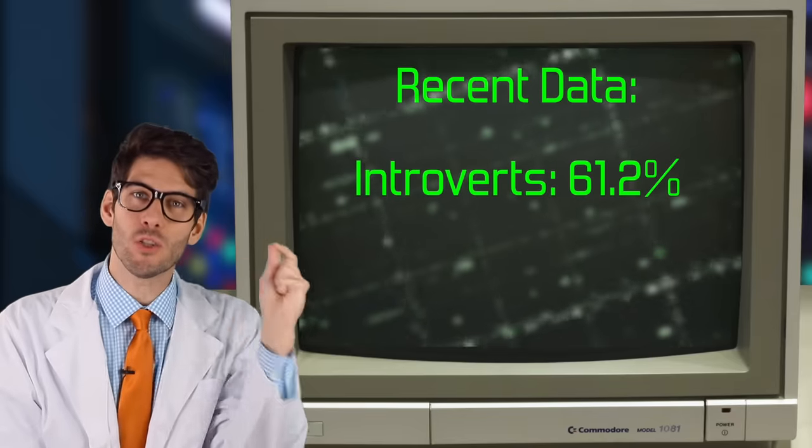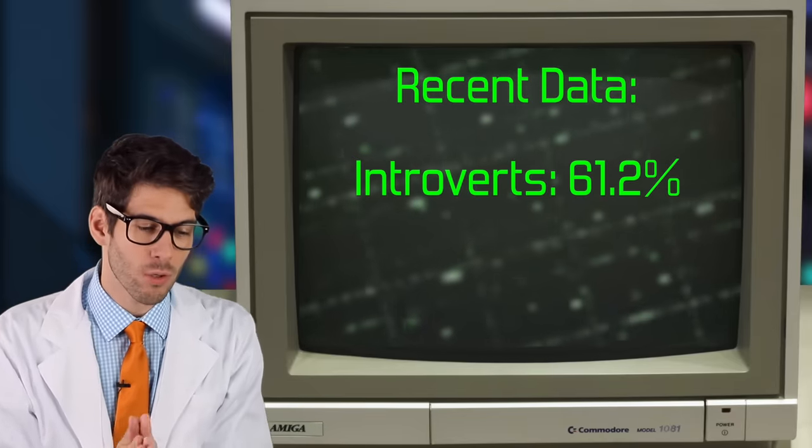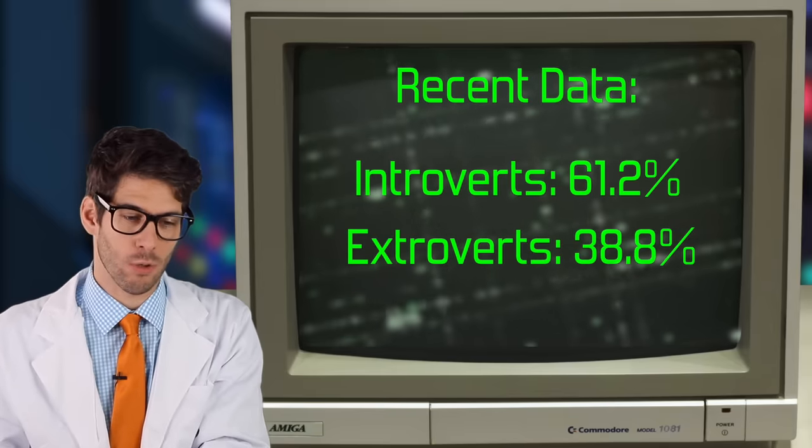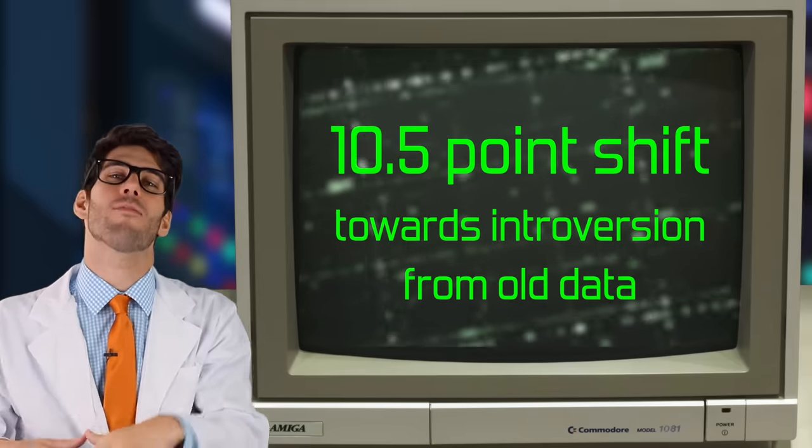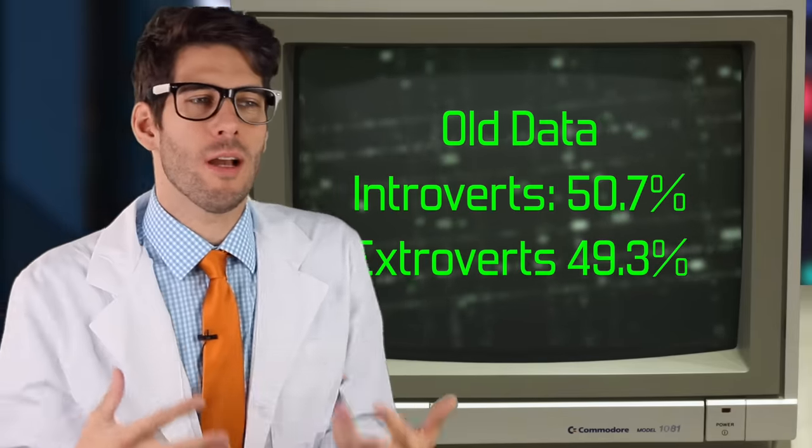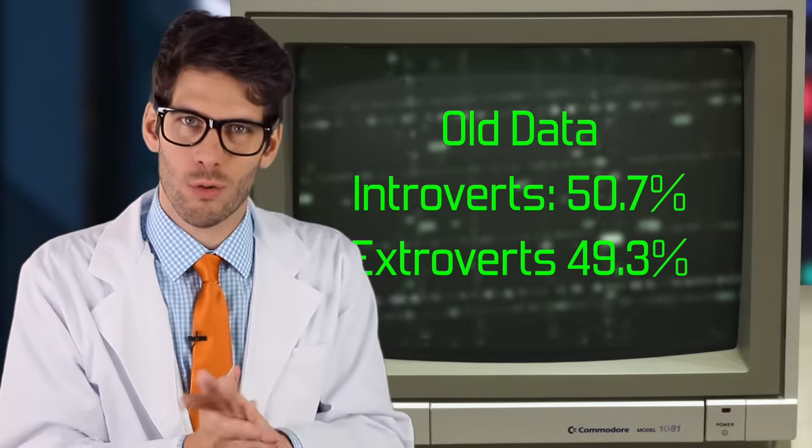First up, let's just look at the four letters and the percentages of each dichotomy. Of course, by the word dichotomy, we mean something that has two options. So we look at introvert versus extrovert. The new numbers are 61.2% of people are introverts, whereas 38.8% are extroverts. That is a 10.5% swing. So it's interesting to see that more people are identifying themselves as introverts now than they did 20 years ago.